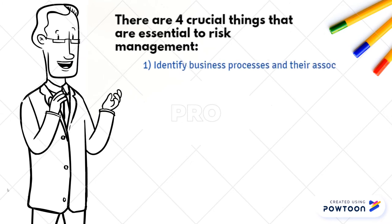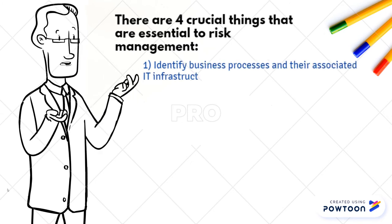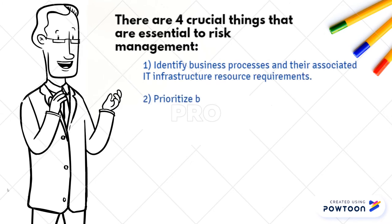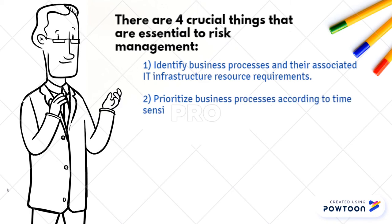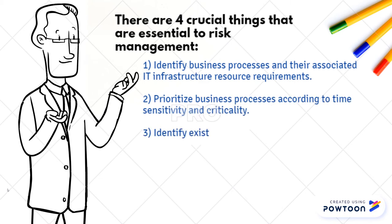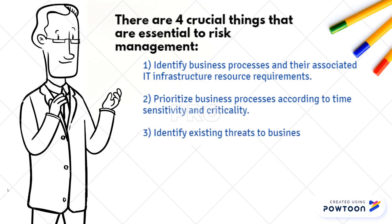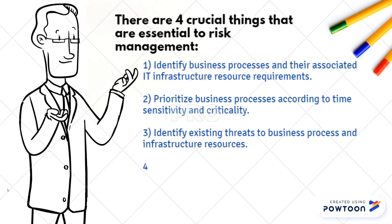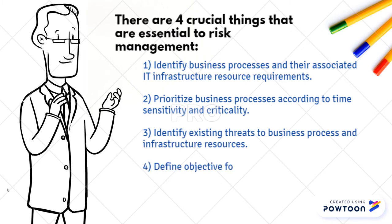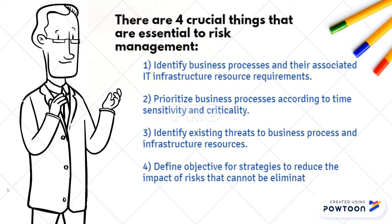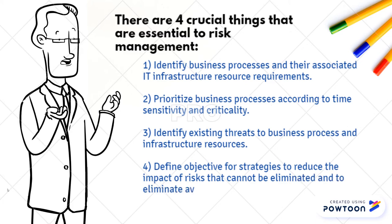There are four crucial things essential to risk management. First, identify business processes and their associated IT infrastructure resource requirements. Second, prioritize business processes according to time sensitivity and criticality. Third, identify existing threats to business processes. Fourth, define objectives for strategies to reduce the impact of risks that cannot be eliminated.